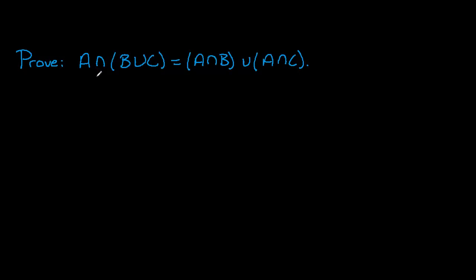In this video we will examine how to prove a claim involving set equality. We want to prove that A intersect (B union C) equals (A intersect B) union (A intersect C). This is actually a distributive property of sets. To begin, we want to show subset containment in both directions. Let's first show that the set on the left is a subset of the set on the right.